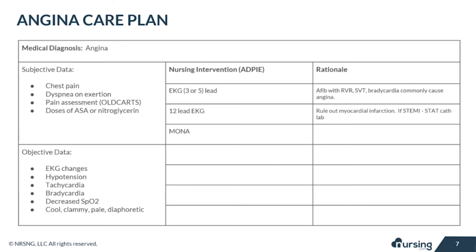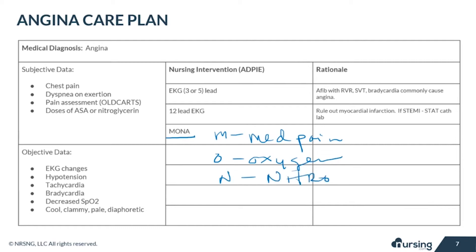A super important mnemonic we use for the treatment of angina is MONA. This stands for medicine for pain, O is for oxygen, N for nitroglycerin, and A for aspirin. This is the initial treatment for acute coronary syndrome. MONA is not the correct order of administration, just an easy way to remember the components of this treatment.